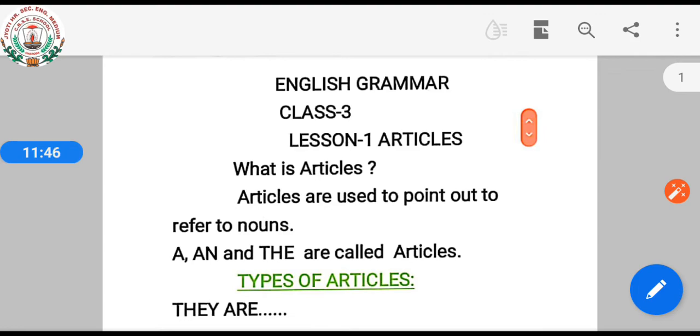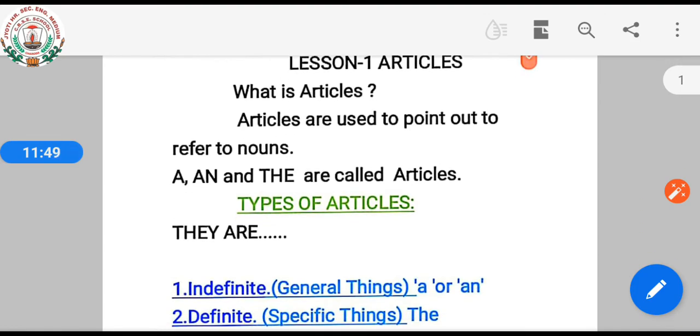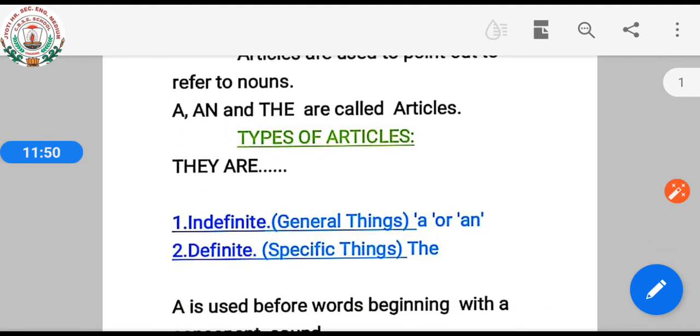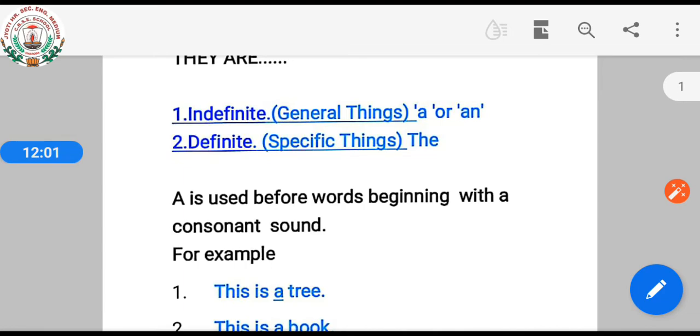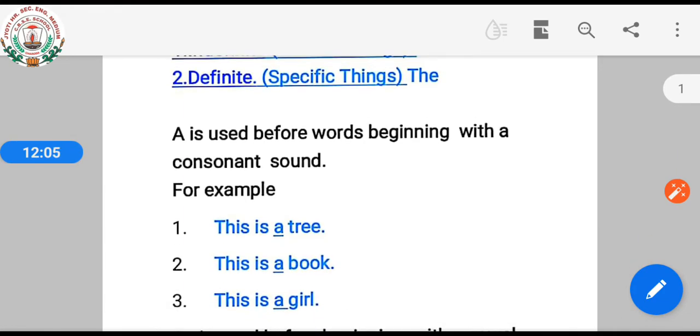A, an, or the are called articles. Two types of articles: indefinite articles where we use 'a' or 'an', and definite articles where we use 'the'.